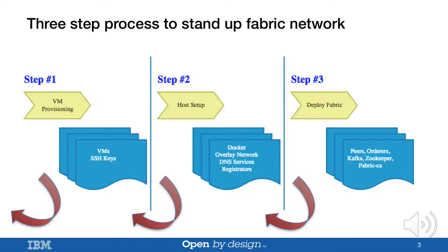There are three steps to stand up your Fabric network. Step one is to create some virtual machines. If you choose to stand up your Fabric network in a cloud, you will need to have an account from a supported cloud such as AWS, Microsoft Azure, or OpenStack Cloud. If you choose to use a set of physical machines, you will need to do some manual work so that the Ansible Agent can access these physical machines through SSH. In this talk, I will focus on how to stand up a Fabric network in a cloud.